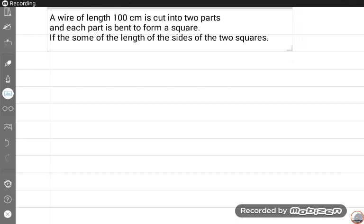We will discuss the techniques. Read this question carefully: a wire of length 100 centimeter is cut into two parts and each part is bent to form a square.